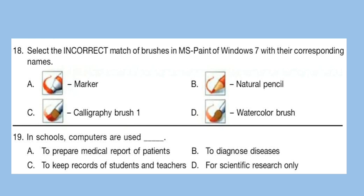Question 19: In schools, computers are used dash. Options are: A. To prepare medical reports of patients. B. To diagnose diseases. C. To keep records of students and teachers. D. For scientific research only. The correct answer is option C — to keep records of students and teachers.